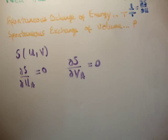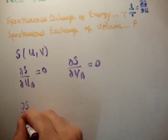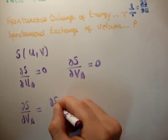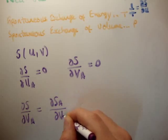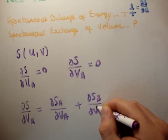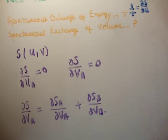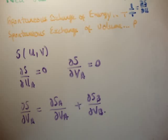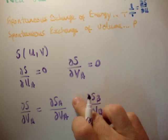We know that the total entropy is just the sum of the individual entropies. That's just a property of entropy. So that means del S del V sub A is equal to del S_A del V_A plus del S_B del V_B. But we know that if we add anything to A, we have to have taken it from B. So del V_B is minus del V_A and vice versa.